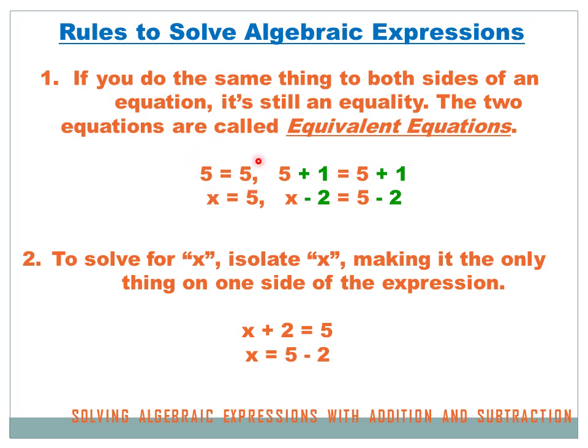You know and I know that 5 equals 5. Well, if I add 1 to both sides of that equation, then I've got 5 plus 1 equals 5 plus 1 — 6 equals 6. All we did was add the same thing to both sides of the equation and it's still an equality.